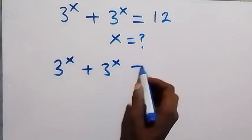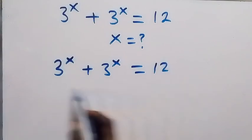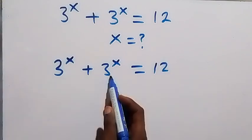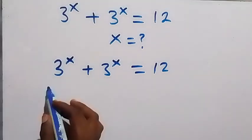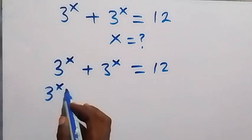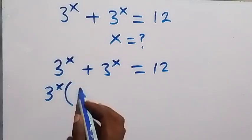From here we have 3^x + 3^x = 12. This is 3^x + 3^x, which is the same thing as 2 times 3^x. Or you bring 3^x out of the bracket, what is left is 1 plus 1, which equals 12.